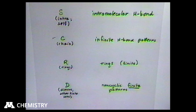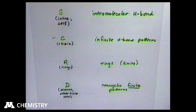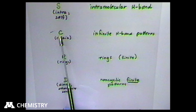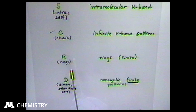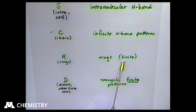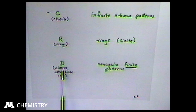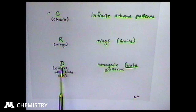The four descriptors we use are: S for an intramolecular hydrogen bond (something impossible to represent when a molecule is just a dot); C for infinite chains; R for rings (finite cyclic patterns); and D for discrete non-cyclic finite patterns like dimers, though you can have more than two molecules in a D pattern.